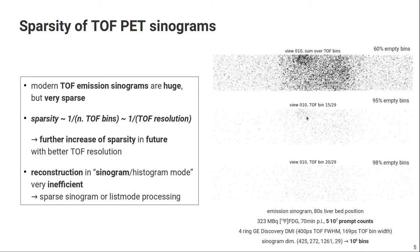And if you look at the maximum of the counts, the maximum counts are maybe between 3 and 5. And of course, if you go to more extreme TOF bins, the sparsity is even bigger. So here in TOF bin 20 out of 29, it's already 98%. You can actually see in this 80-second scan we acquired 5 times 10^7 prompt counts, but the sinogram has 10^9 bins actually. So it's very, very sparse. Of course, if you look into the future, if the time-of-flight resolution of our scanners continues to increase, the sparsity of our emission sinograms will also drastically increase.